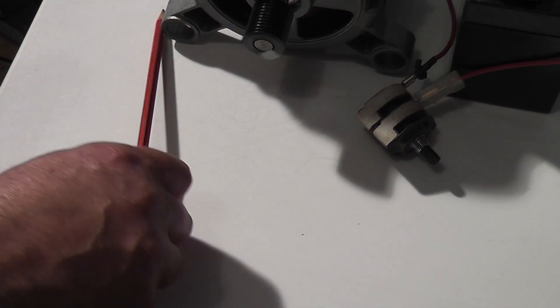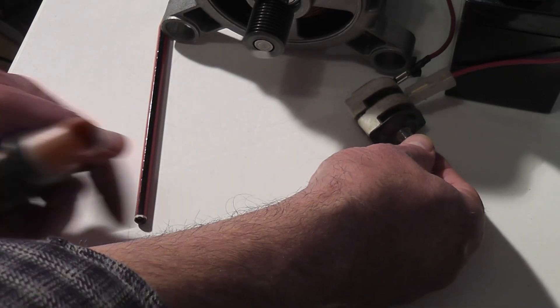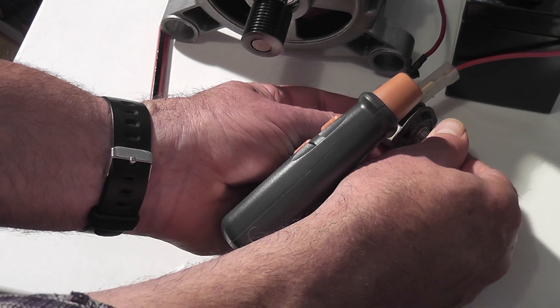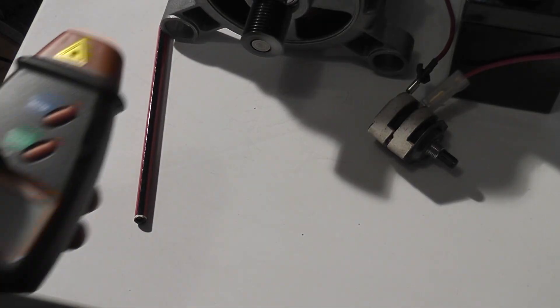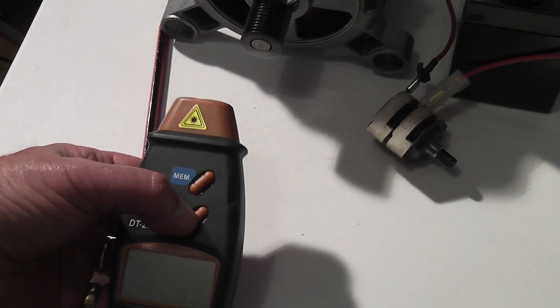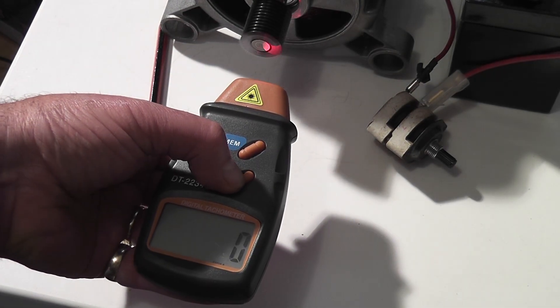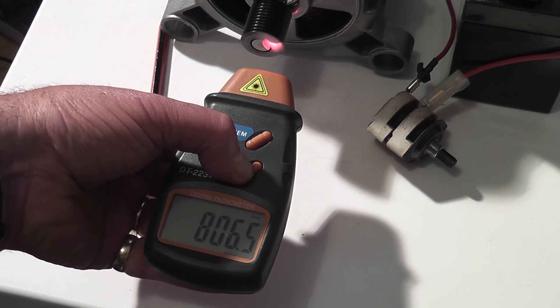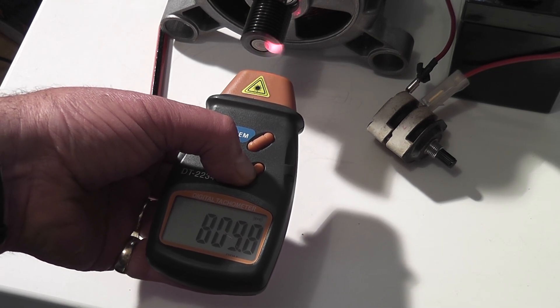So what we do now, we'll bring it up there, we'll bring it right up and get it spinning. Now we have it right up, let's have a look there now. You can see there now it's just over 800 RPM.